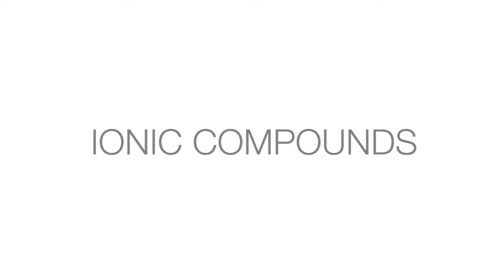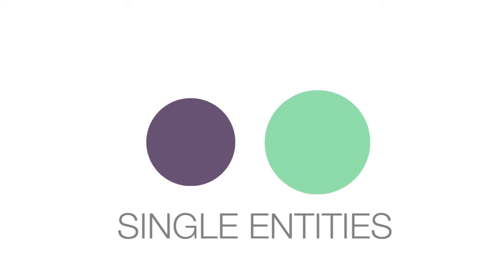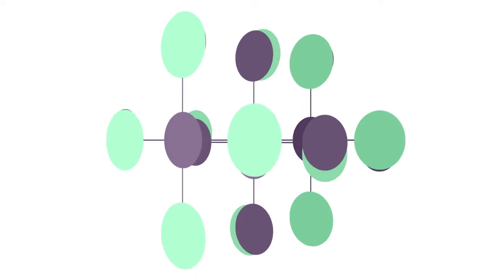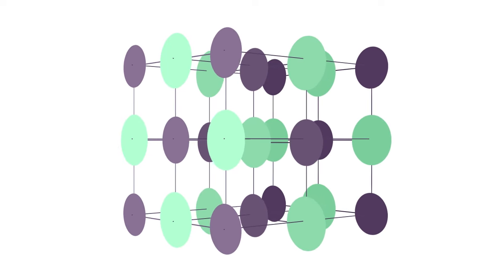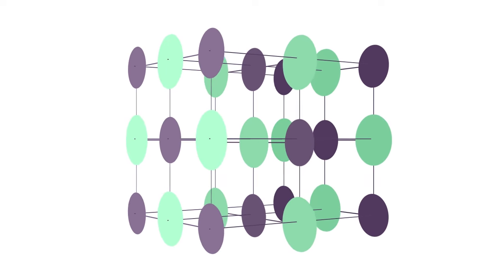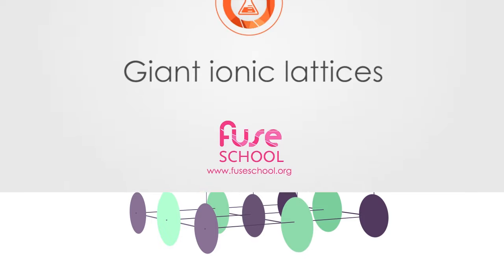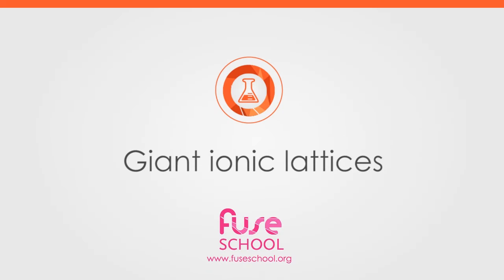So far we have looked at ionic compounds as single entities. Ionic compounds actually exist as large 3D structures known as giant ionic lattices. In this lesson we will learn about these giant ionic lattice structures.